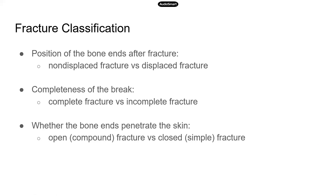Before we take a closer look at the steps in bone repair, we're just going to go through the different types of fractures real quick. There are different ways to classify fractures — for instance, fractures can be described in terms of the location, the nature of the break, or what the fracture looks like. But because this is a topic that I think is probably not going to be on the TEAS, we're just going to look at some of the general common classifications.